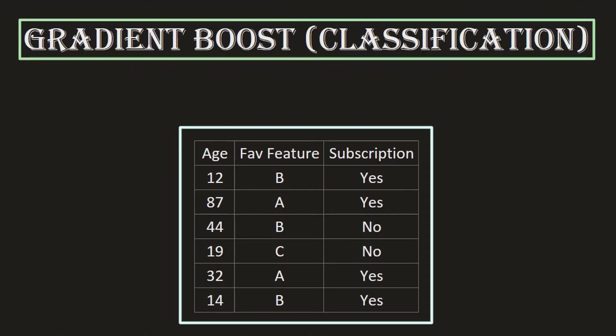Welcome to this new lecture where we are going to understand how the gradient boost algorithm works in terms of a classification problem. In the previous lecture we covered gradient boosting algorithm from absolute scratch and understood how it works in case of a regression problem. We are going to use that as a foundation here. If you missed the previous lecture, please check it out first — the link is in the description box below.